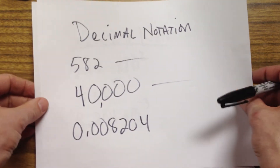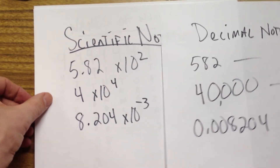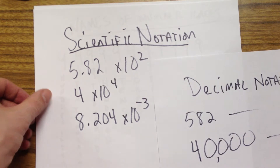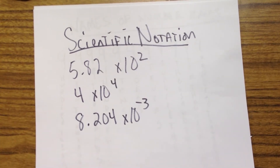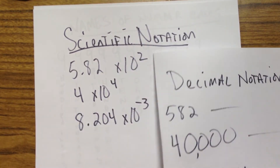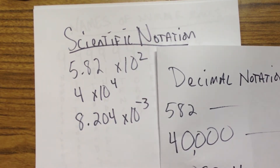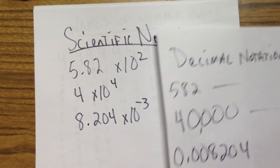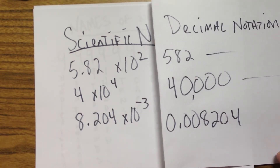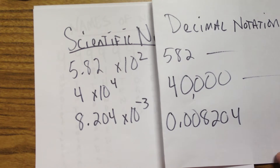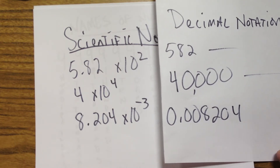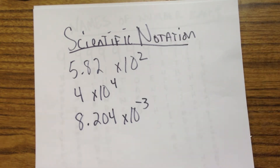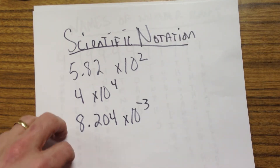We can however write those same numbers in scientific notation if we so choose. 582 would turn into 5.82 times ten to the second. 40,000 turns into 4 times ten to the fourth. And 0.008204 would be written as 8.204 times ten to the negative third. What in the world are all these things and what do they mean? We'll get to that in just a second.